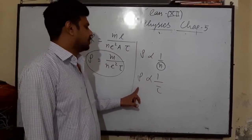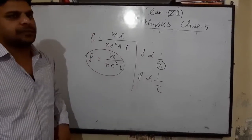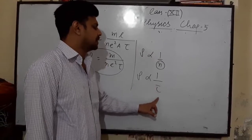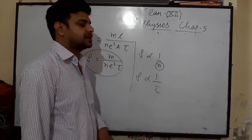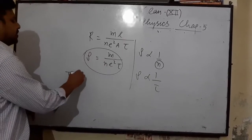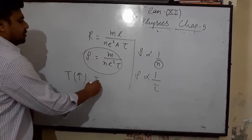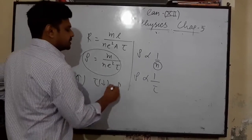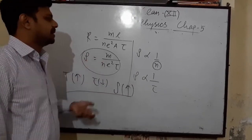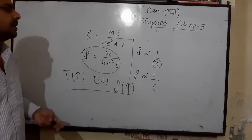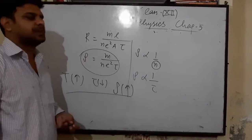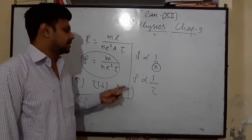Tau (τ) is the mean relaxation time. On increasing the temperature of a metallic conductor, its resistivity increases because mean relaxation time decreases when we raise the temperature. So tau decreases, and resistance or resistivity increases. But for a semiconductor, the nature is quite opposite — on increasing temperature, its resistivity decreases.